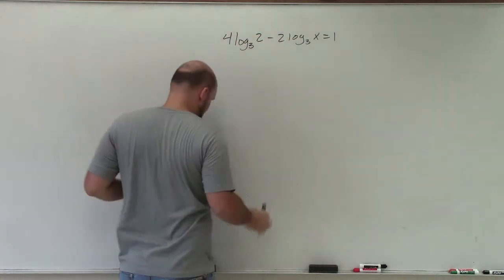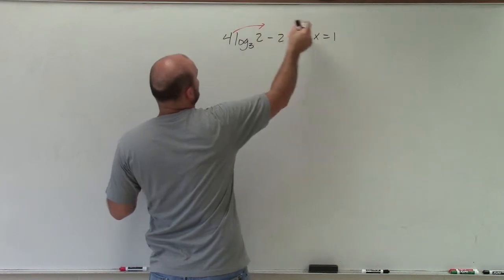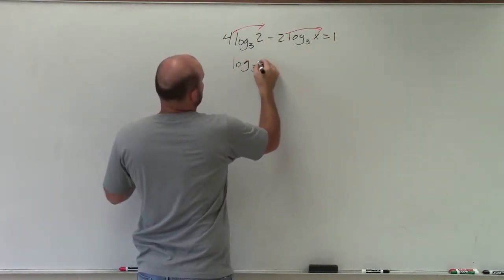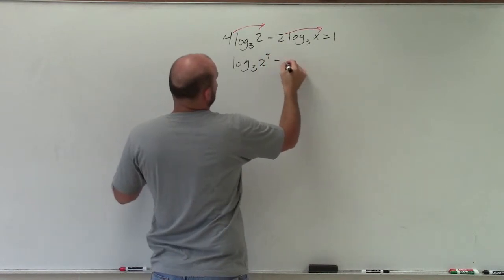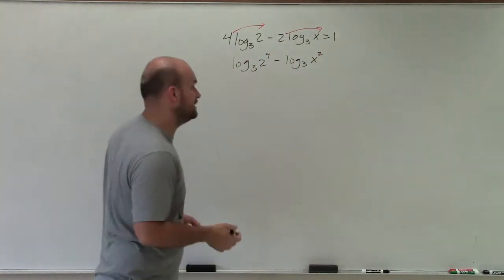So the first thing I'm going to do is take each number that I'm multiplying in front and rewrite those as my exponents. So I have log base 3 of 2 to the fourth minus log base 3 of x squared equals 1.